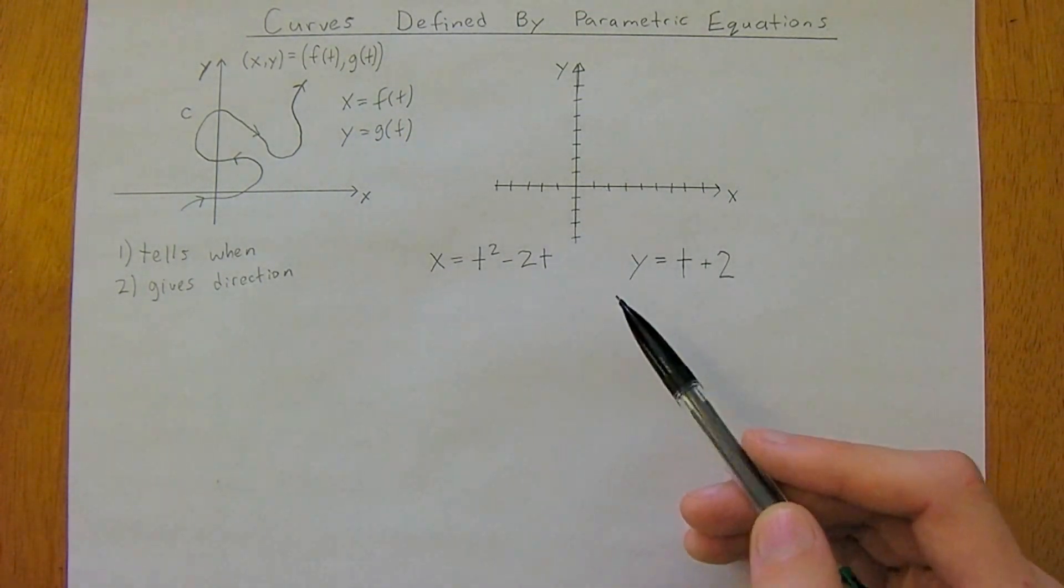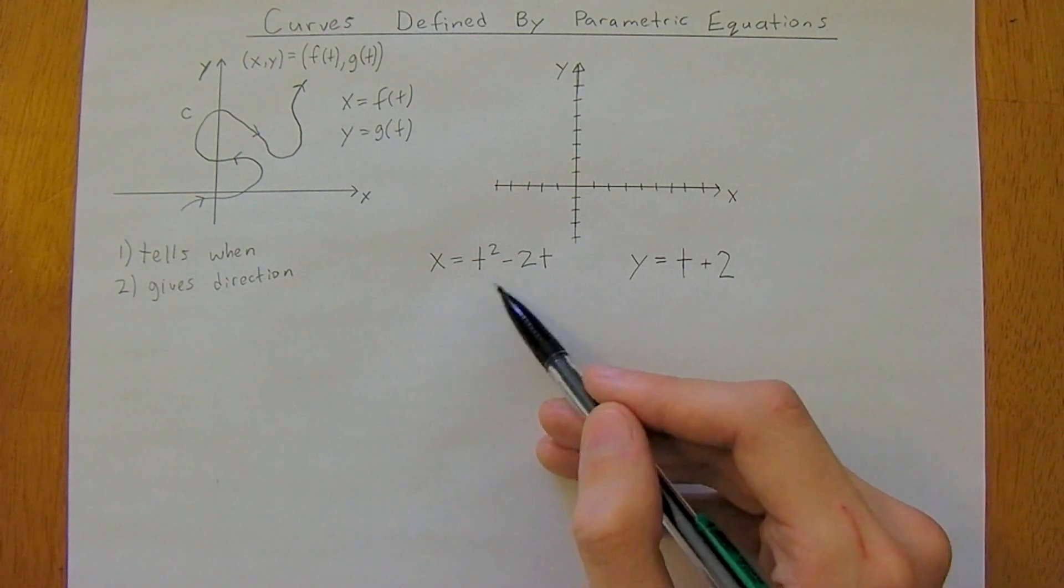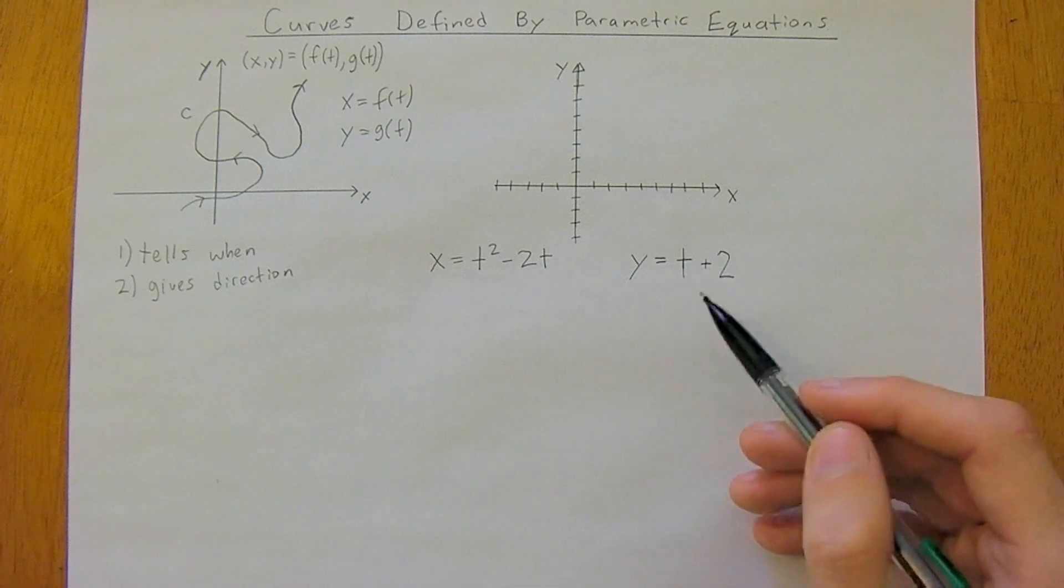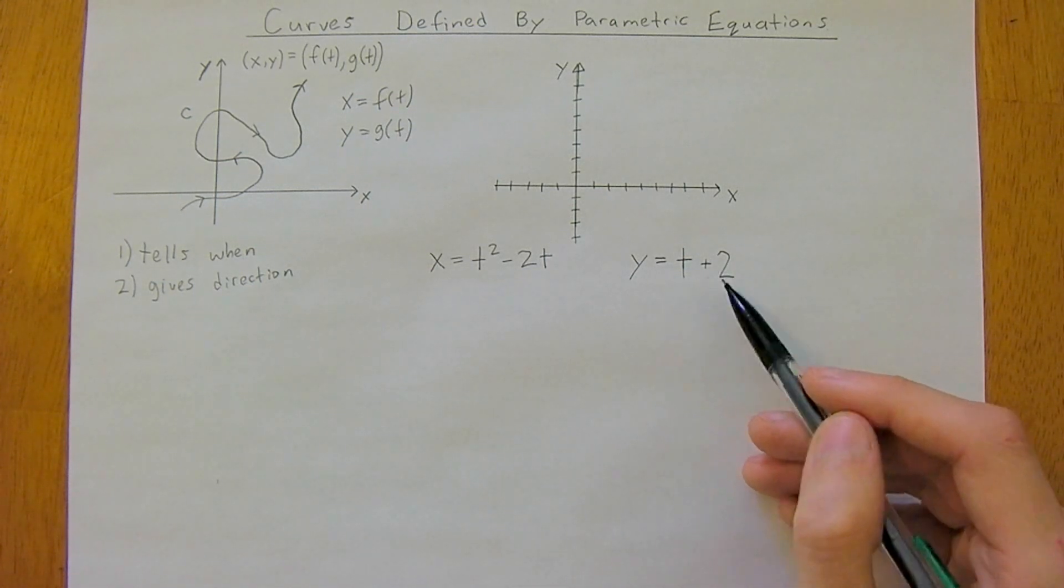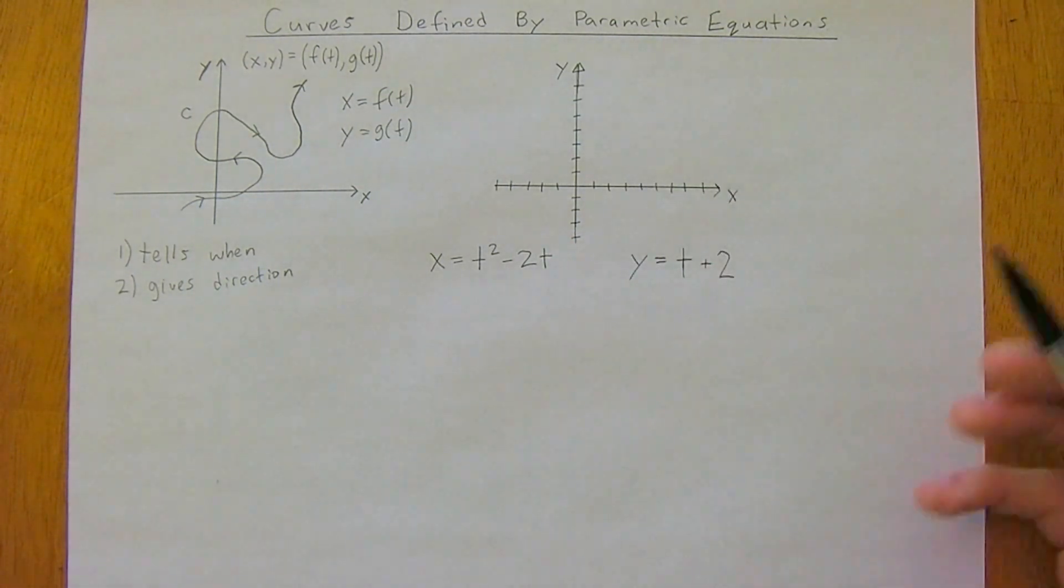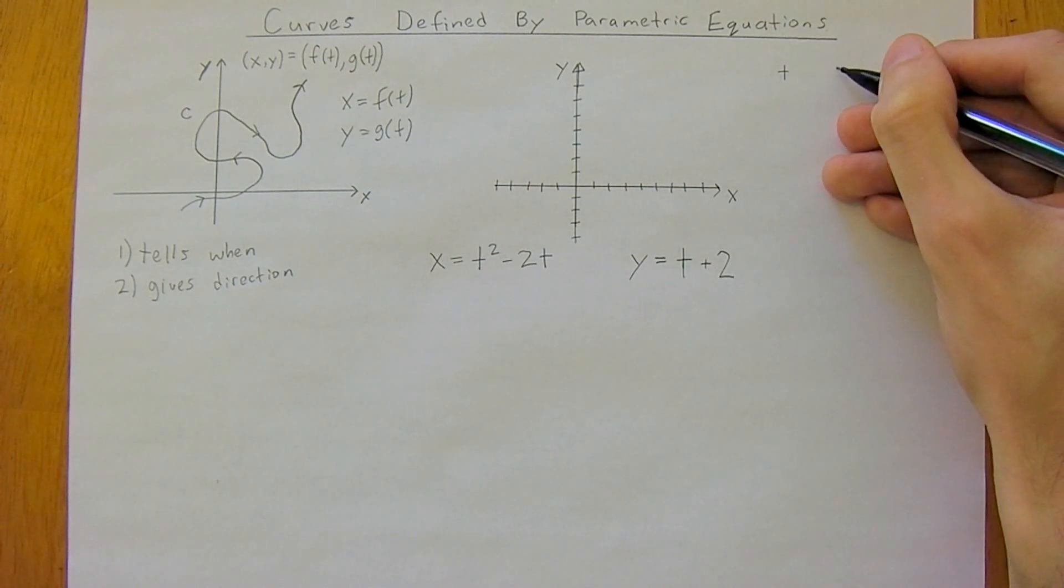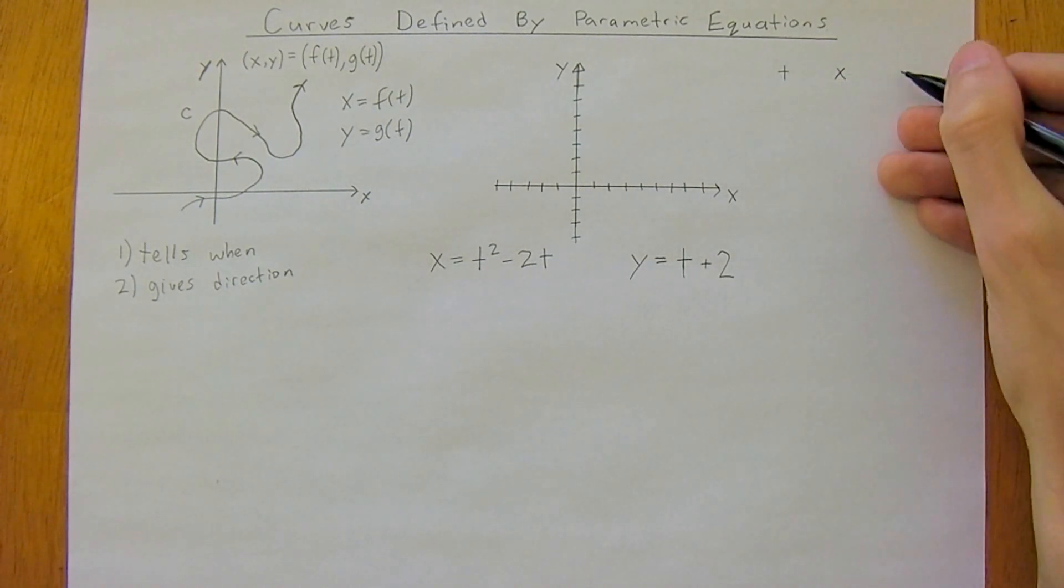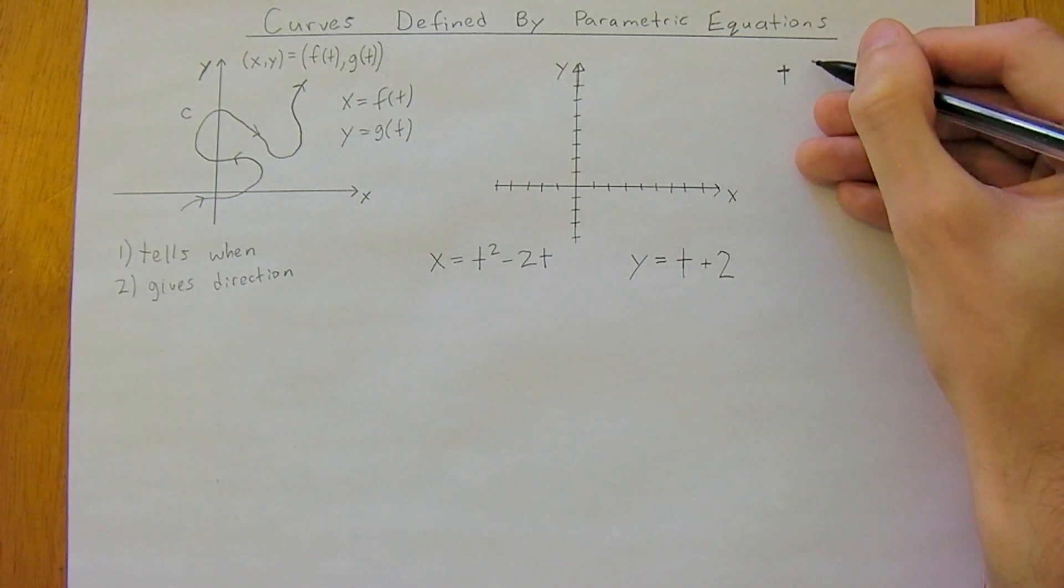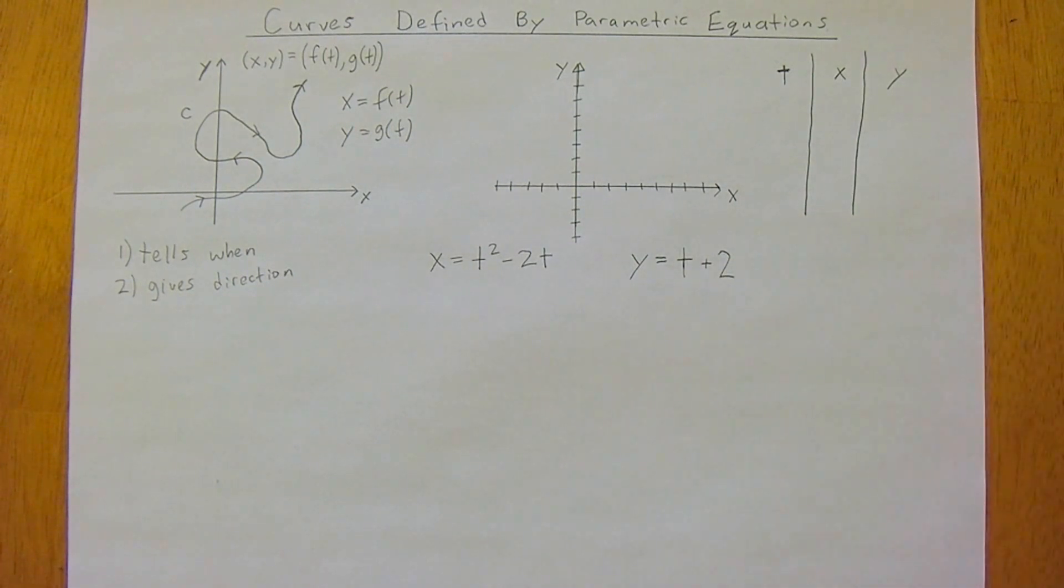We'll start with a simple example here. We've got x equals t squared minus 2t, and y equals t plus 2. The first thing we do is make a little table with t, x, and y.